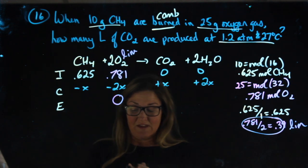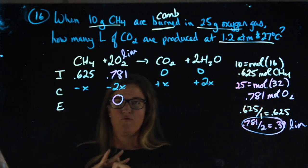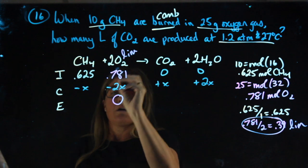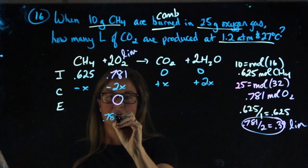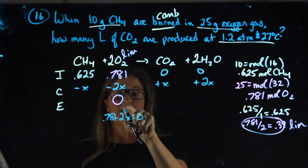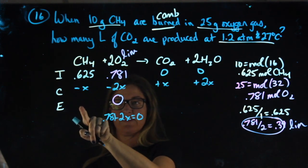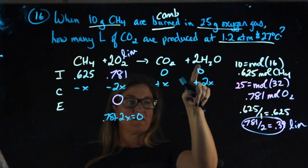Make sure when you're filling in the ICE chart, you fill in all of the rows. Don't just stop when you have what you think you need. 0.781 minus 2x equals zero. This is going to allow me to find out what x is, so that I can plug it in here to find the ending value, and here, and here.